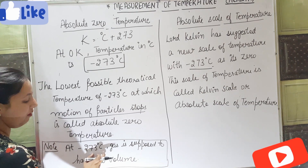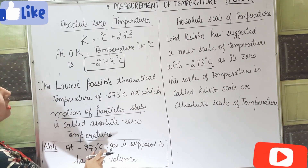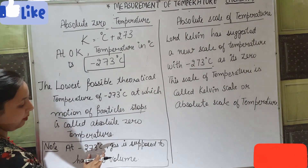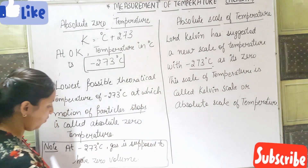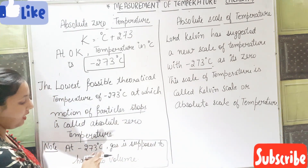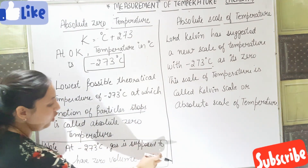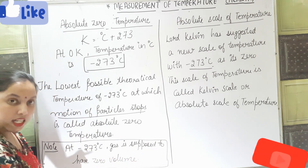At minus 273 degree Celsius, that is at absolute zero temperature, the gas is supposed to have zero volume. At this temperature, the volume of the gas becomes zero.